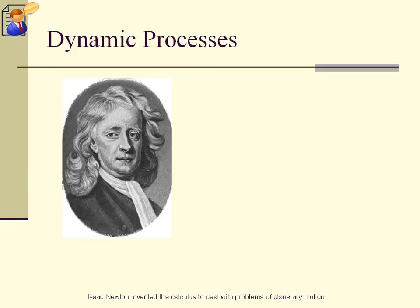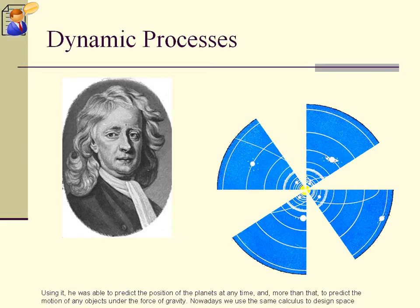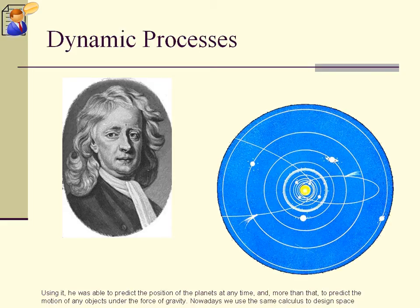Isaac Newton invented the calculus to deal with problems of planetary motion. Using it, he was able to predict the position of the planets at any time, and, more than that, to predict the motion of any objects under the force of gravity. Nowadays we use the same calculus to design space satellites and send rockets into space.